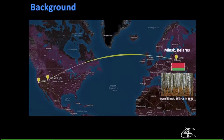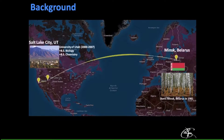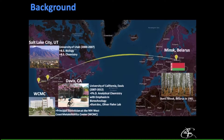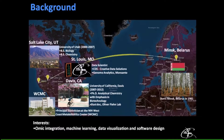A little bit of background about me: I was born in Minsk, Belarus. I received my bachelor's in both biology and chemistry from the University of Utah in Salt Lake City. I then went on to get my PhD in analytical chemistry with emphasis in biotechnology at the University of California Davis, and did a postdoc in Oliver Feene's lab.